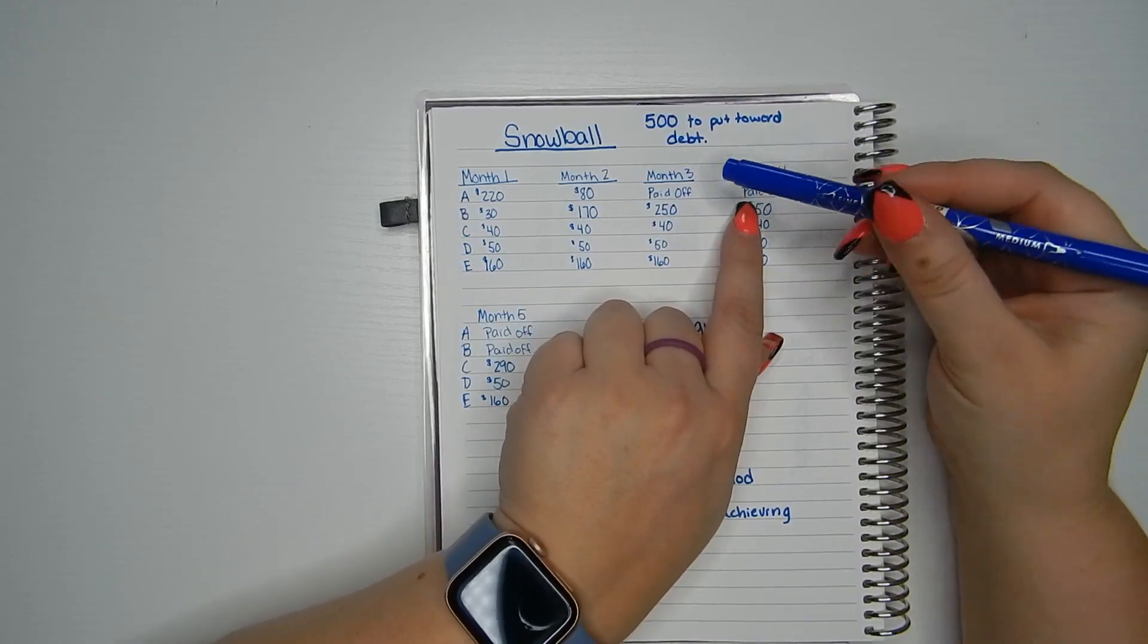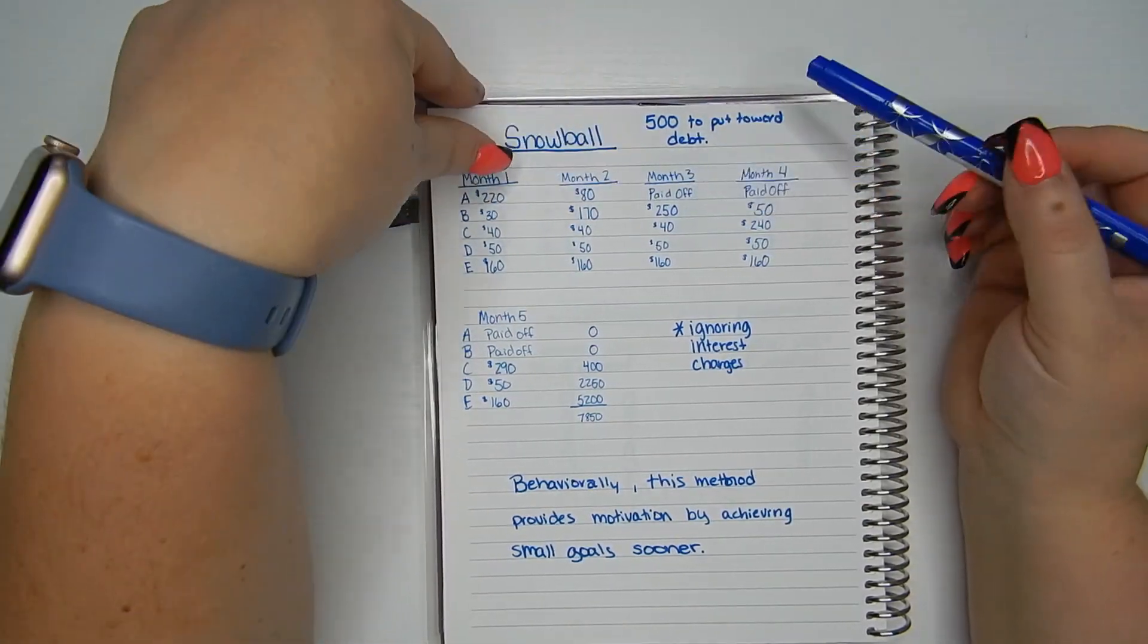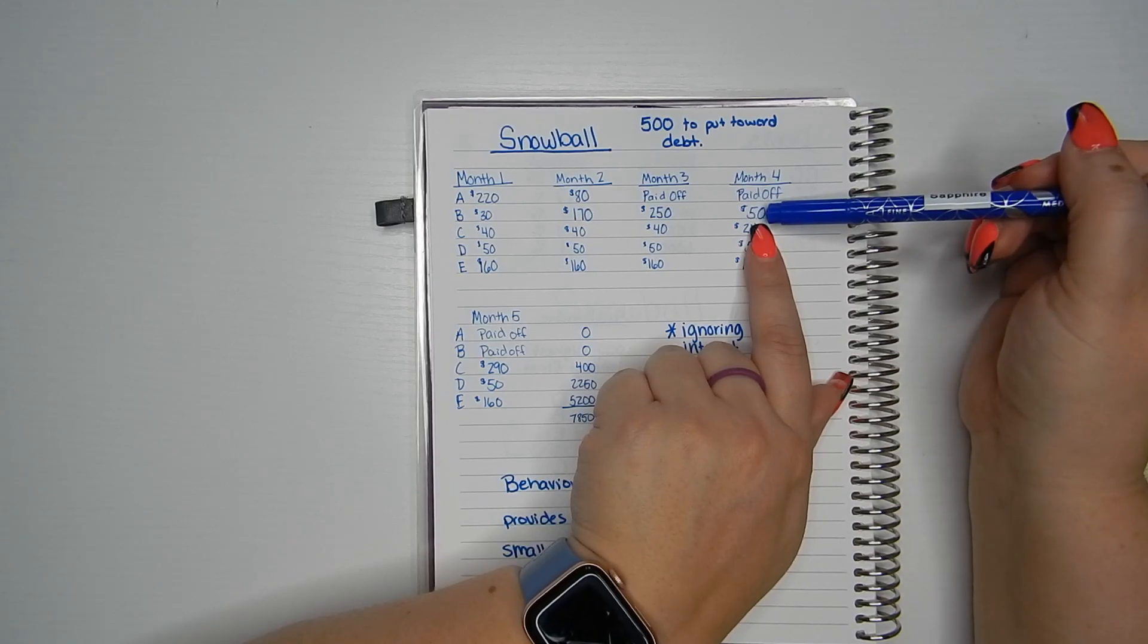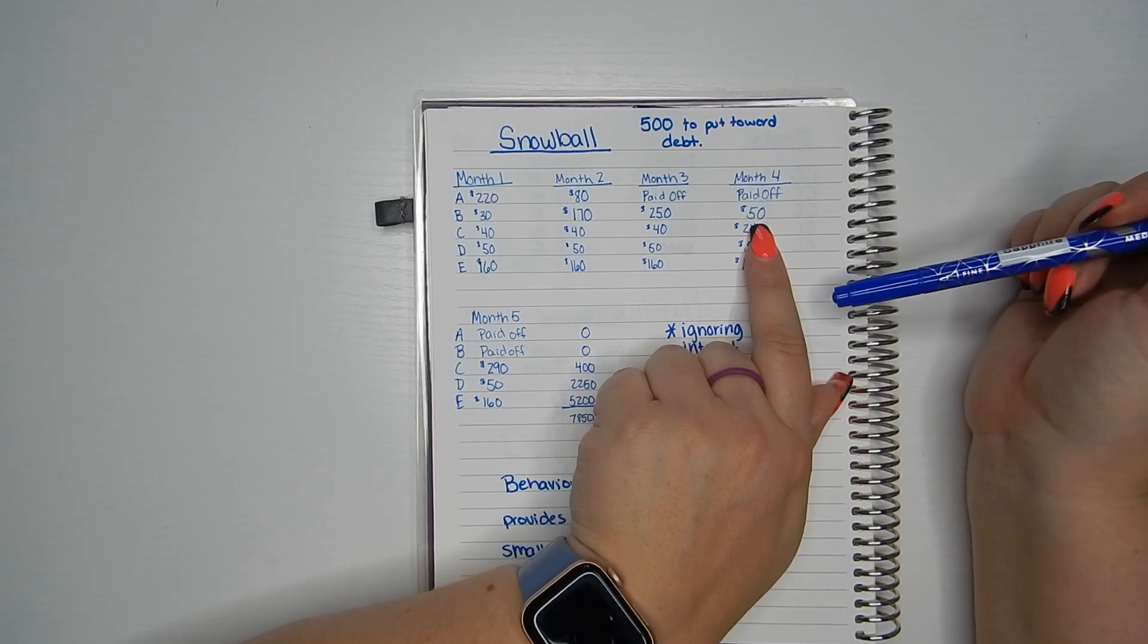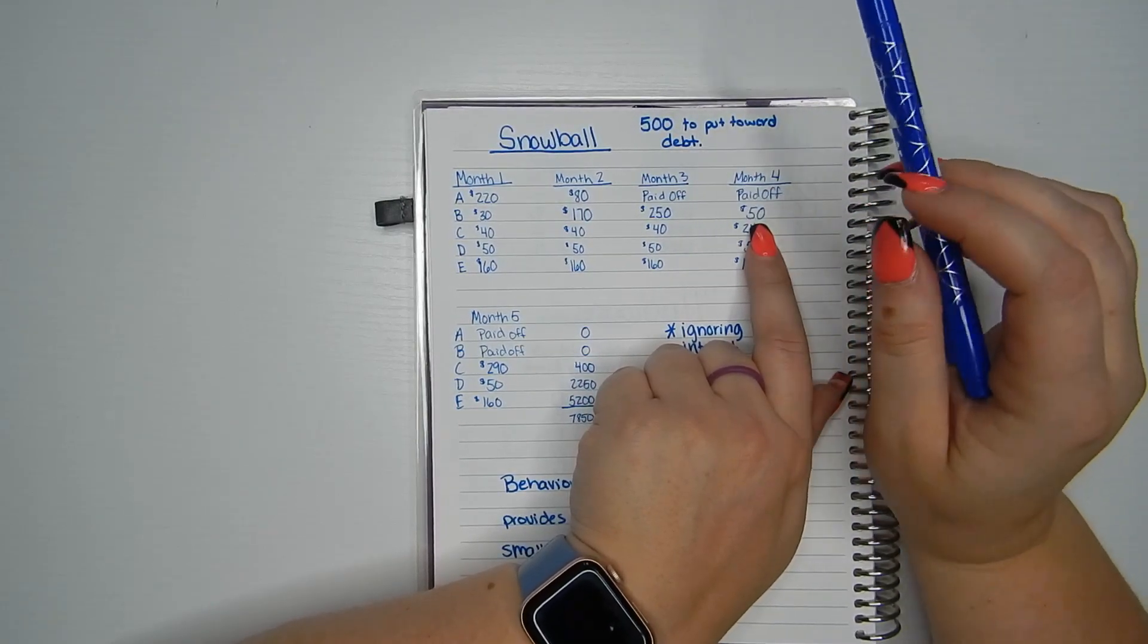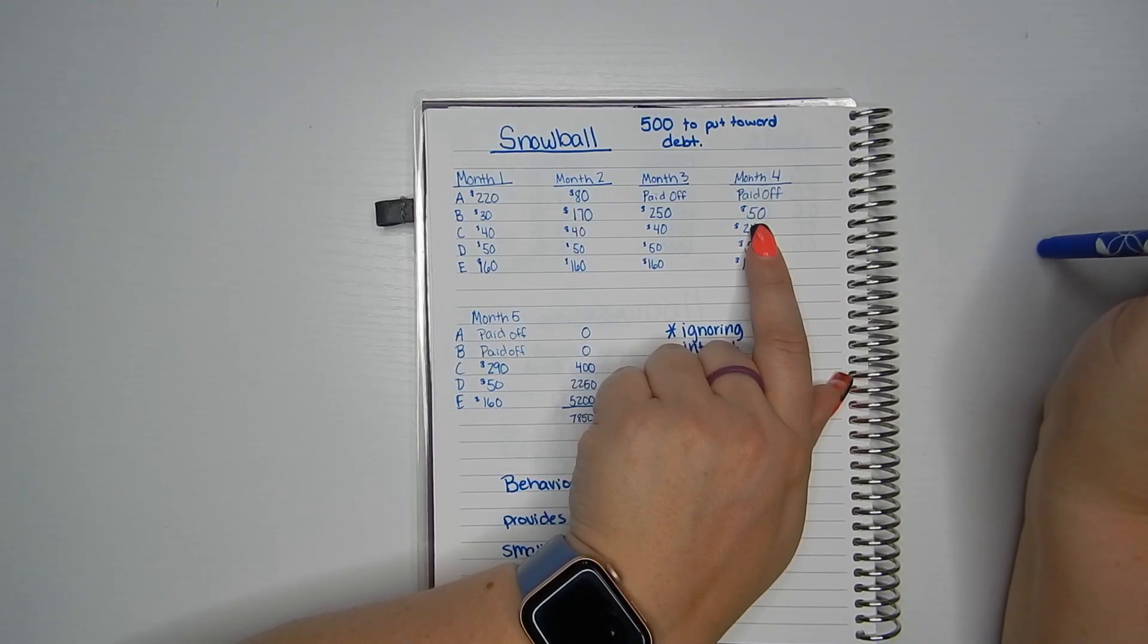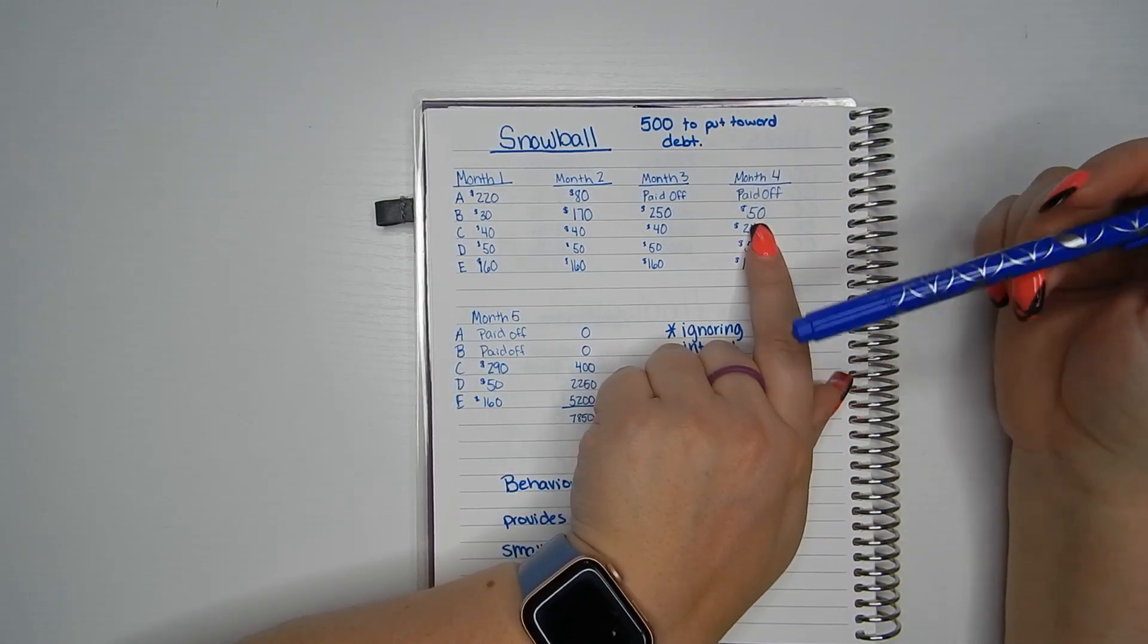Month four, card A is still all paid off. I don't have to worry about that one anymore. Now card B had a balance of $500, but look at what I've paid already. So now I only have $50 left to pay off on card B. Look, month four, and you've already knocked out two of your five credit cards. How amazing is that feeling? You've had two victories already in four months. So that's something to think about with snowball is you get those victories and that motivation.